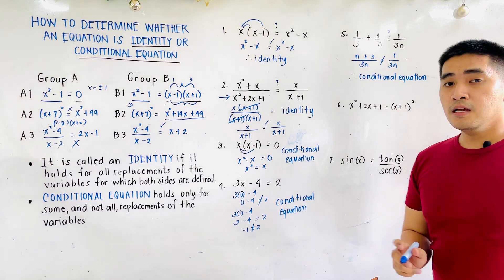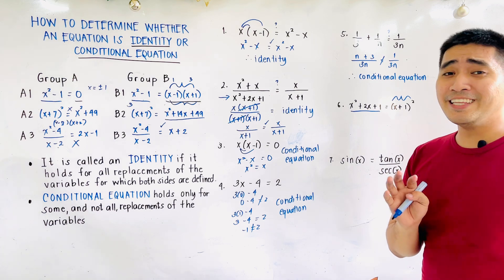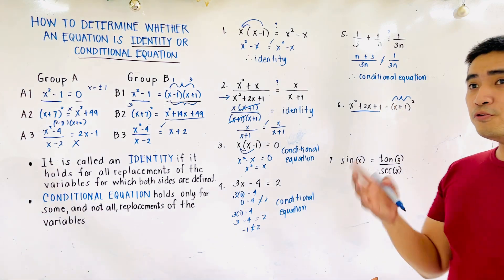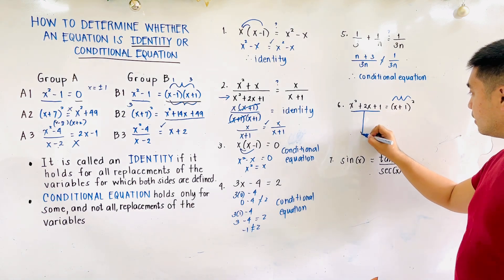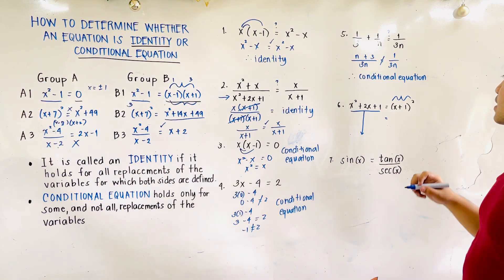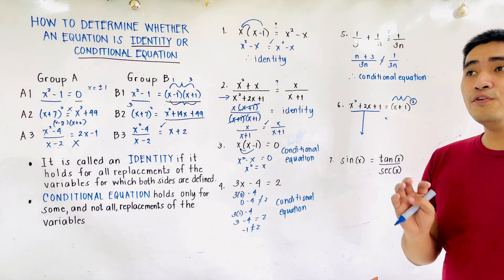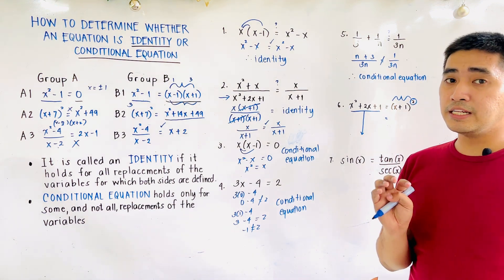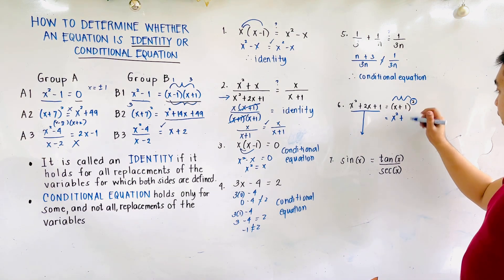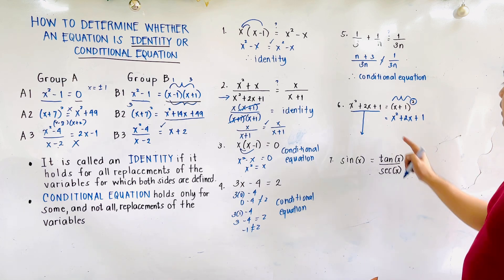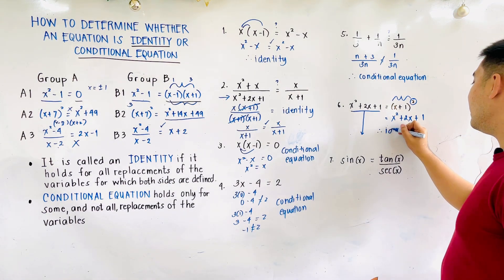For number six, we are given x squared plus 2x plus 1 is equal to x plus 1 quantity squared. This time I will manipulate the right side. Since x plus 1 is being squared, let's expand it. This becomes x squared, plus 1x plus 1x which is 2x, plus 1 times 1 which is 1. Is x squared plus 2x plus 1 equal to the left side? Yes. Therefore, we could say that this is an identity.